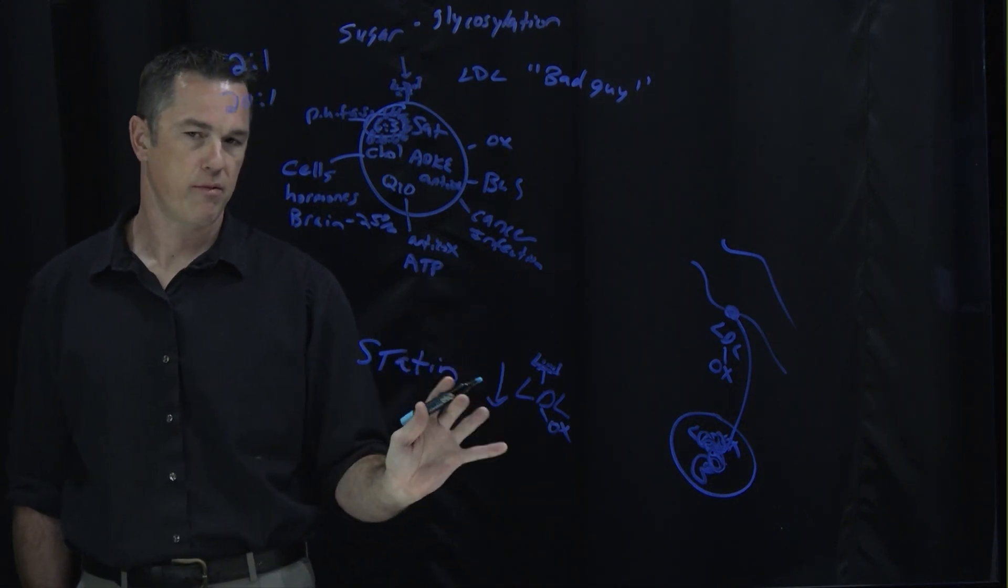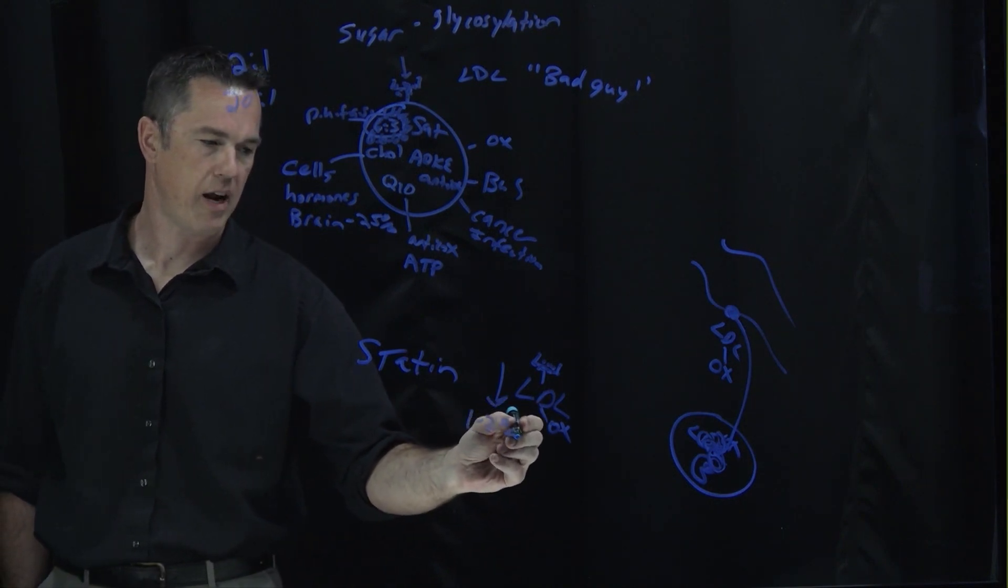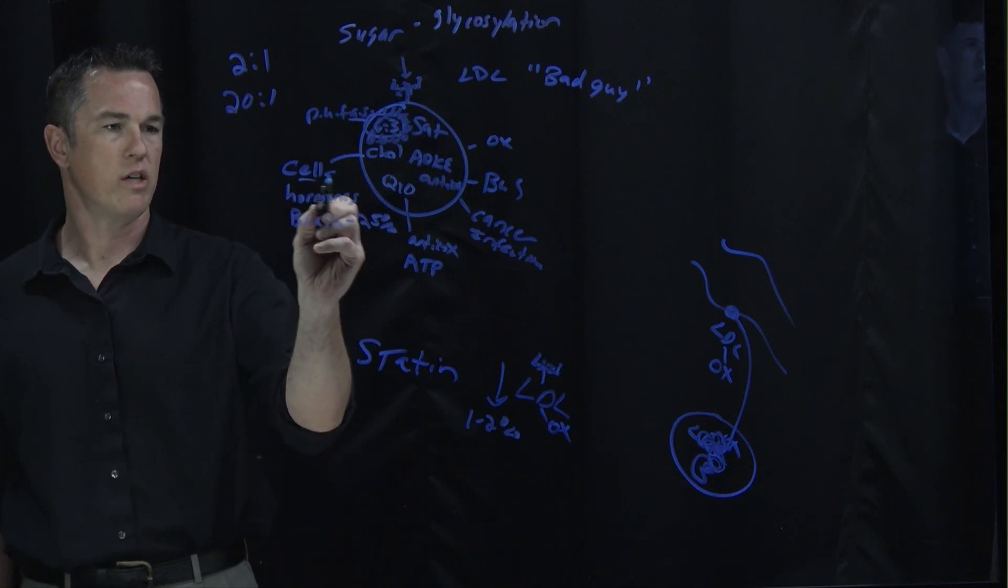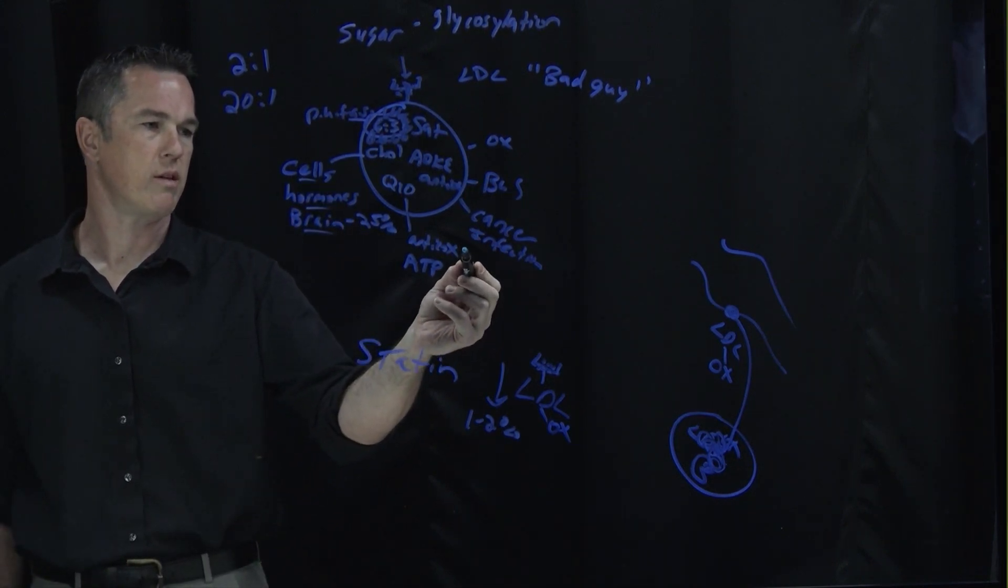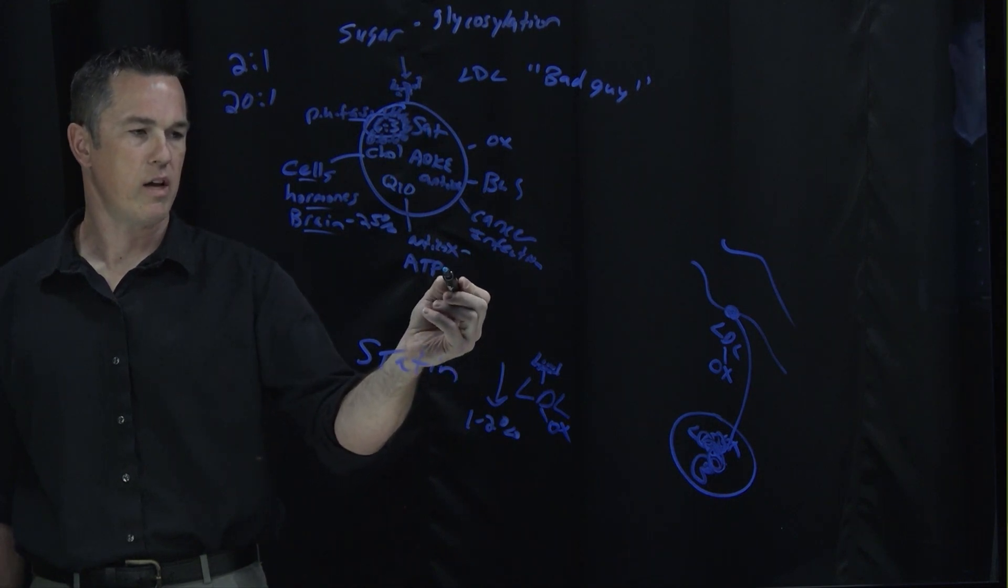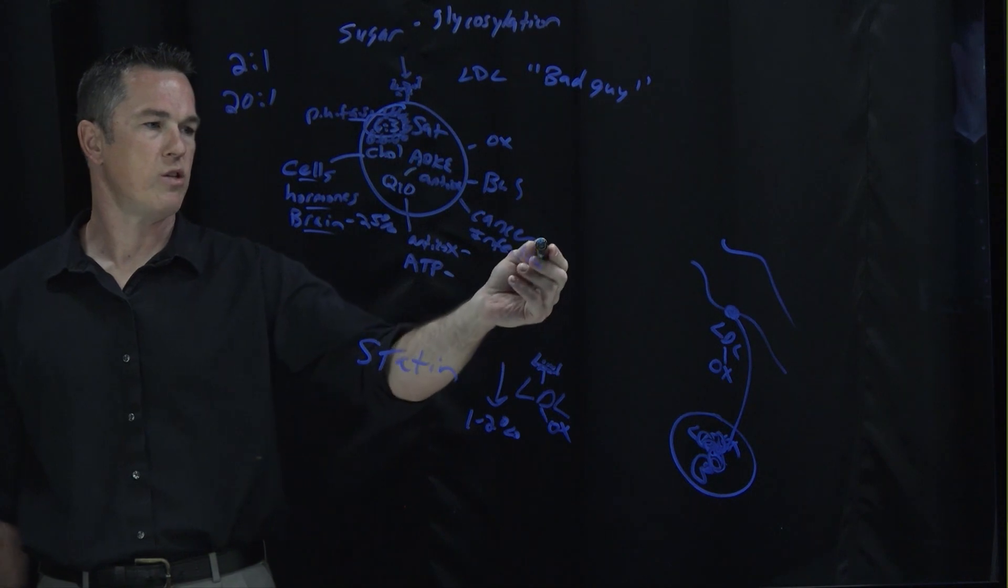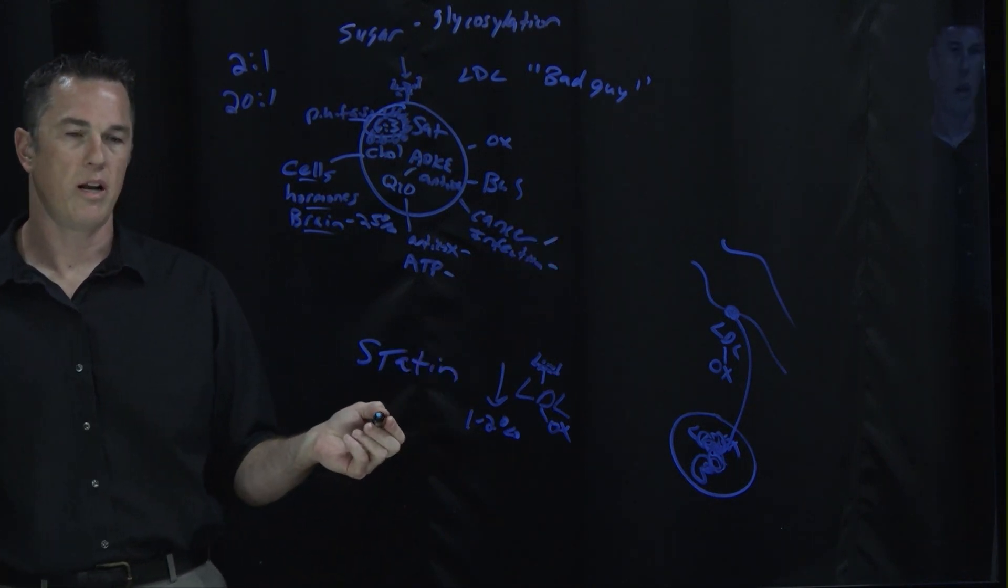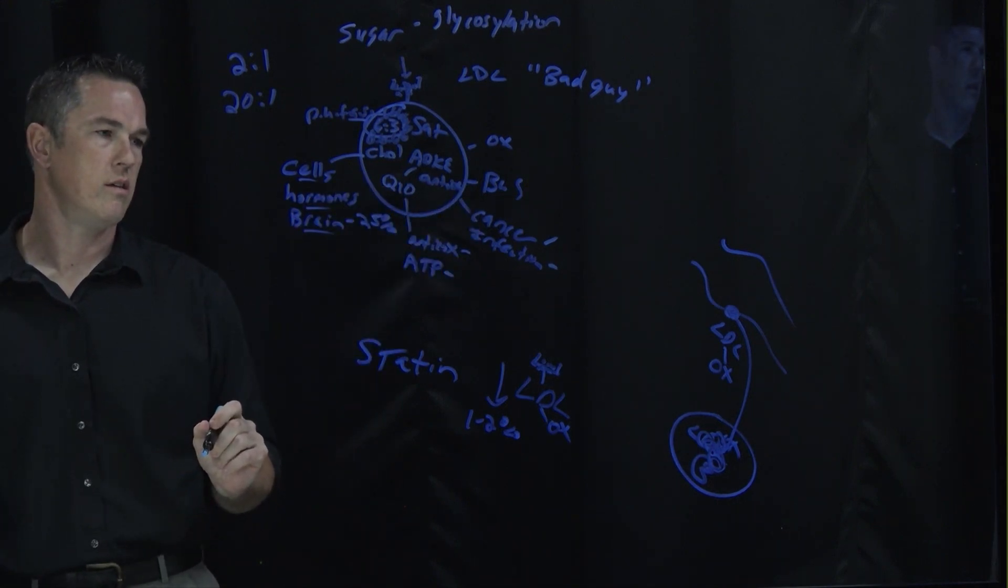And so you get about, for primary prevention with absolute numbers, you get about a 1-2% absolute risk reduction by taking a statin. But you're changing your cell structures, you're changing your hormones, you're potentially messing with the brain function, you're potentially messing with your antioxidant system, your energy production, causing vitamin deficiencies, and potentially messing up your immune system and its ability to fight off these invaders.